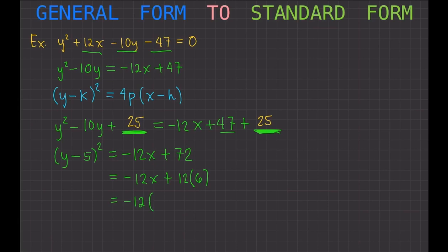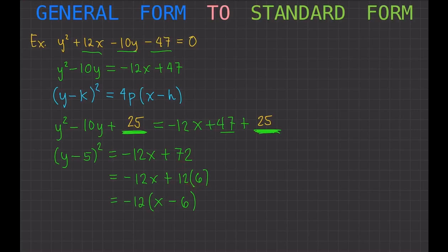After factoring out negative 12, the right-hand side becomes negative 12 times x minus 6. We can verify this by distributing: negative 12 times x gives negative 12x, and negative 12 times negative 6 gives positive 72. So the factoring is confirmed.